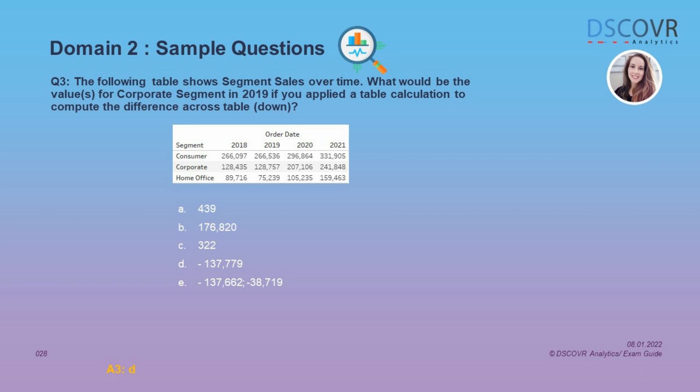Moving on to table calculations — you may see examples where they provide a table and ask what the output would be if you were to change your scope. Instead of computing using table across, you'd compute using table down, and you have to perform that calculation in your head. They won't give you very large numbers, but you do need to know how changing the scope affects the resulting output. Here we're given a table showing segment sales over time, and our task is to figure out the values for the corporate segment in 2019 if you apply the table calculation across table down. The answer is D.